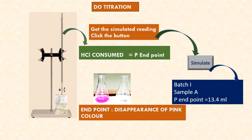Let me simulate again for batch two students. Sample B phenolphthalein endpoint is 7.1 ml — please make a note. Simulating once again for sample C: phenolphthalein endpoint is 13.1 ml.